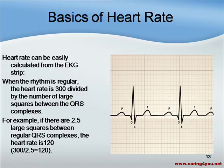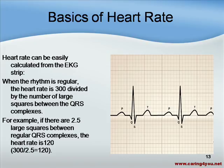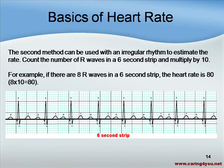Looking at the next slide, there are two and a half large boxes between the R-to-R interval. We're looking at the R-to-R interval — the peak of the QRS complex. There are two and a half big boxes from the R on the first wave to the R on the second wave. Knowing this, we take 300 divided by 2.5 blocks, and we come up with a heart rate of 120 beats per minute. This is how we do it when the rhythm is regular.